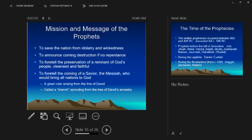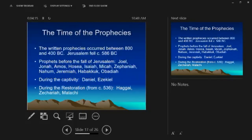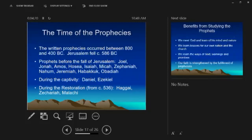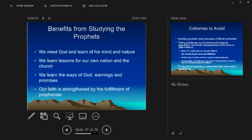The work of the prophets first came on the scene from the falling away of Israel, when the priesthood became corrupt. Prophets were called directly by God and sent to warn the people. Their mission: to save the nation from idolatry, announce destruction if they didn't repent, foretell the preservation of a remnant, and foretell the coming of a Messiah — from the line of David — who would bring not only Israel but all nations to God. The prophets wrote between 800 and 400 BC; Jerusalem fell in 586.